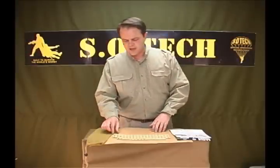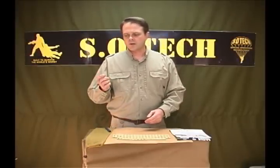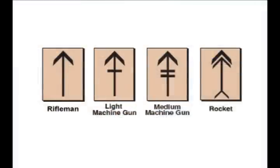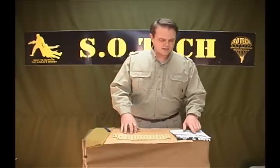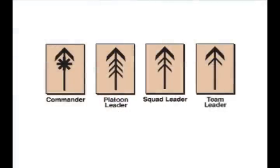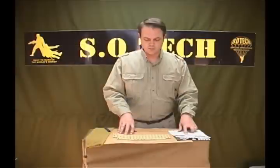We developed the system based off the standard military system, which denotes an automatic rifleman as having an arrow. The military also has a slash for the light machine gun, a couple extra slashes to denote a rocket launcher. There is no notation for command staff, so I added a star — meaning the compass star — to denote a commander, three hash marks on the arrow to denote a platoon sergeant, two hash marks to denote a squad leader, and one hash mark to denote a team leader.